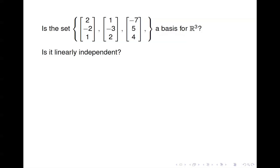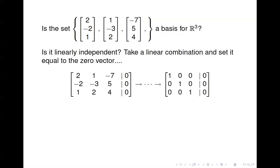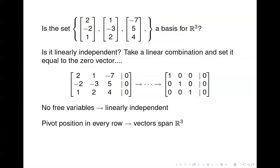Here's another set. It's not immediately obvious whether these vectors are linearly independent, so we put them in a matrix and do row operations. We end up with a coefficient matrix that has a pivot position in every column, so the only solution is the trivial solution — the vectors are linearly independent. Looking at the same matrix, there's also a pivot position in every row, so they span R3, and therefore they are a basis for R3.